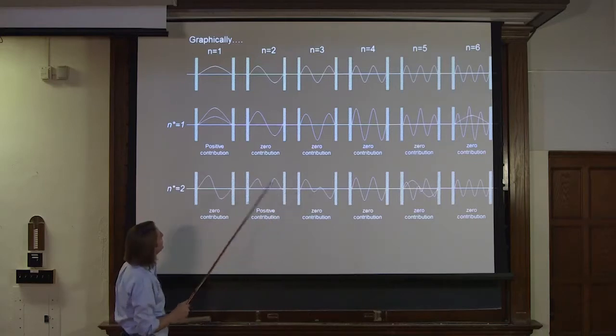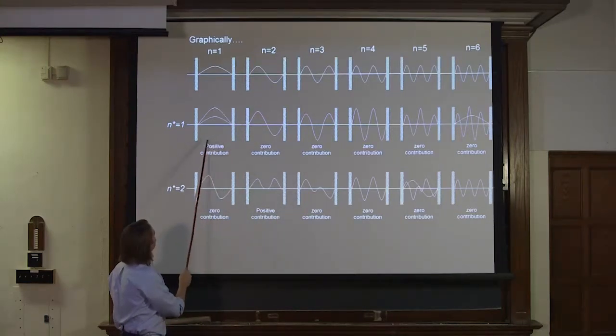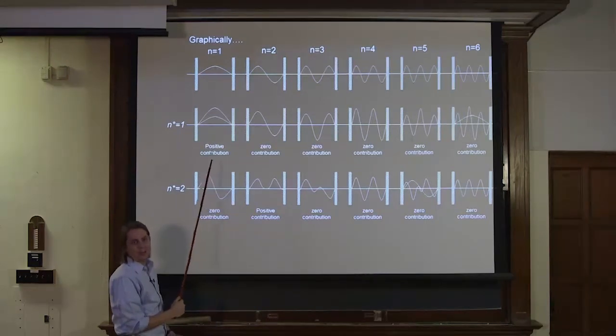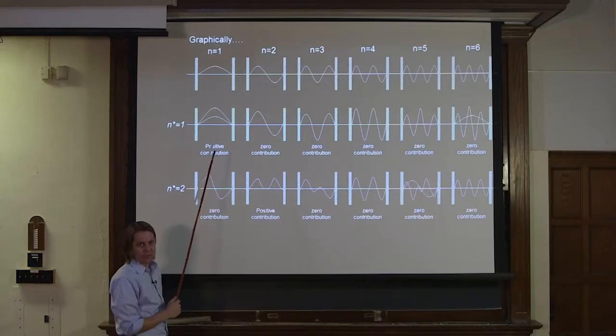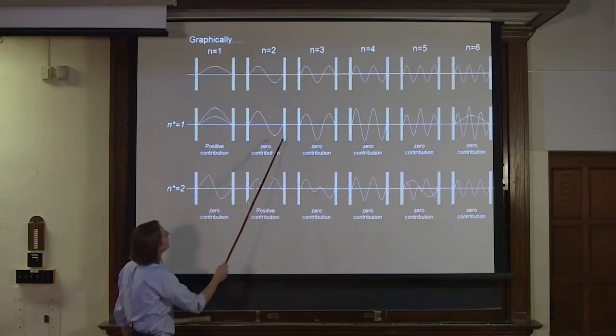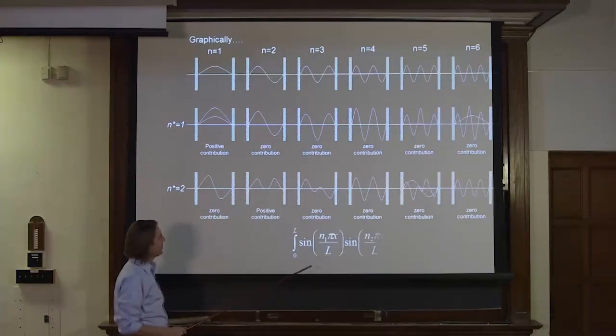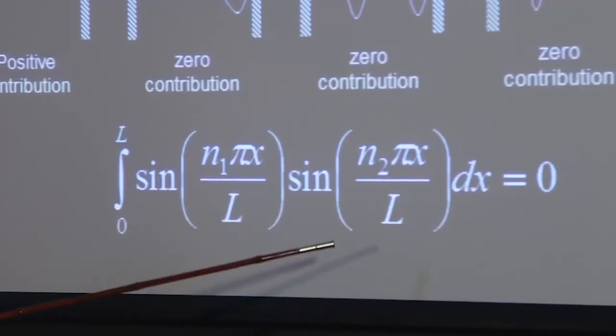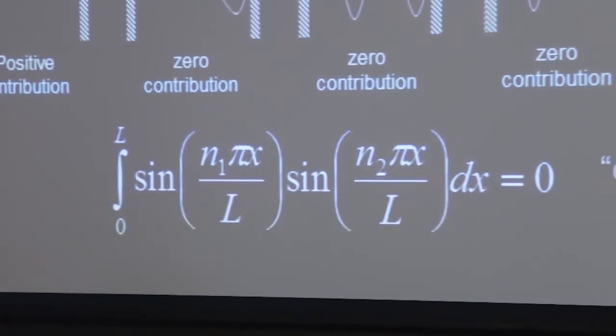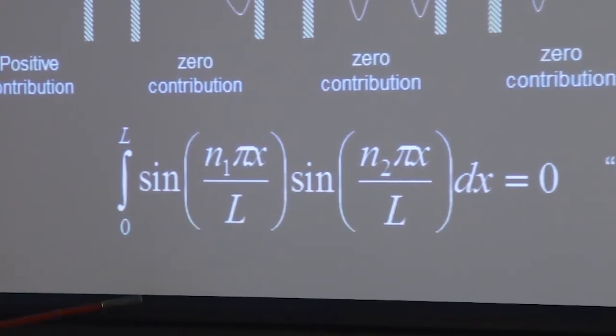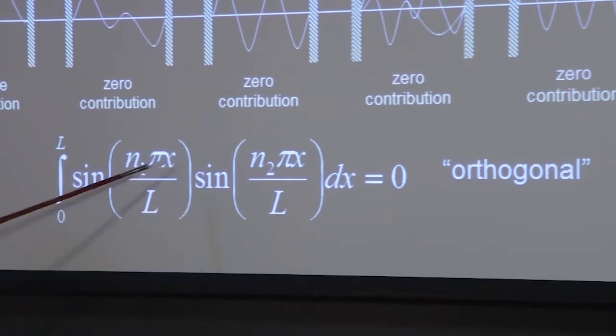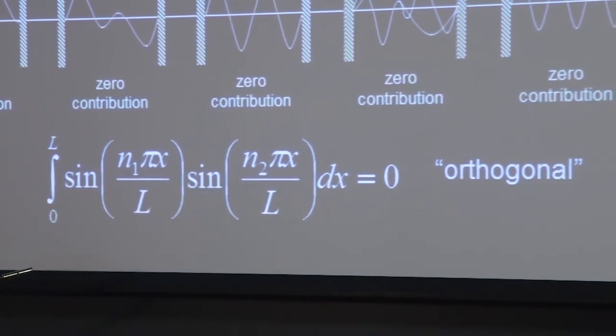So this kind of shows you visually why it works. You get a positive contribution when n star equals n because that's the case where you're squaring something. And you never square something and get a negative number in the world of real numbers. And the fact that all the others give you 0, you can kind of see visually. So when we have functions like the sine of the harmonics n1 times other harmonics n2, we say that's 0 when n1 does not equal n2. And we say those functions are orthogonal. This is true when n1 does not equal n2. When they're the same, that's what turns the Fourier series into a single term.